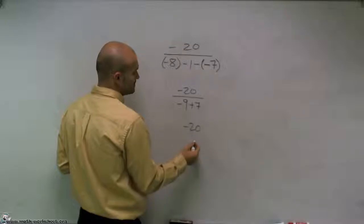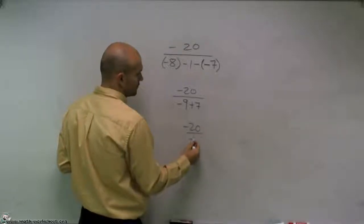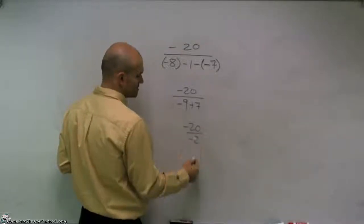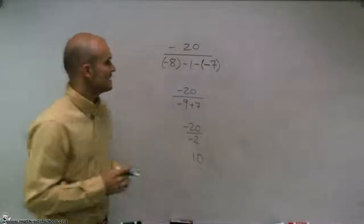Therefore, I have negative 20 all over negative 2, which reduces down to a positive 10.